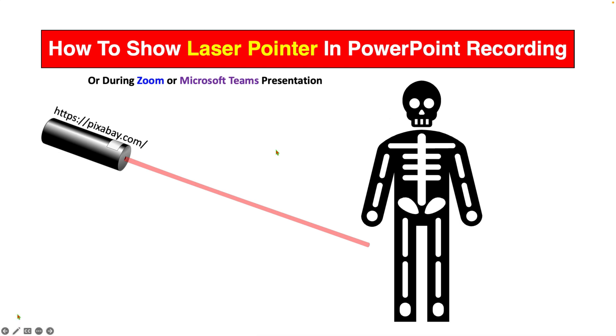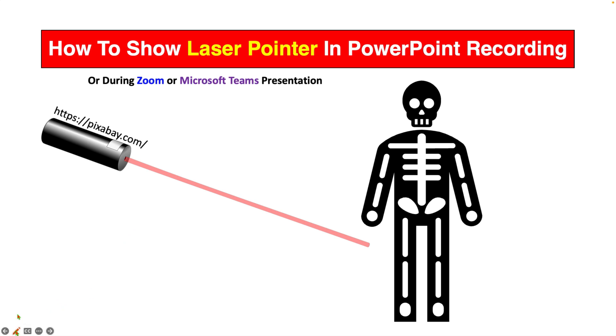To convert the mouse pointer to a laser pointer, you just have to click on this small pencil icon, and after clicking on this pencil icon, you will see the option of laser pointer.